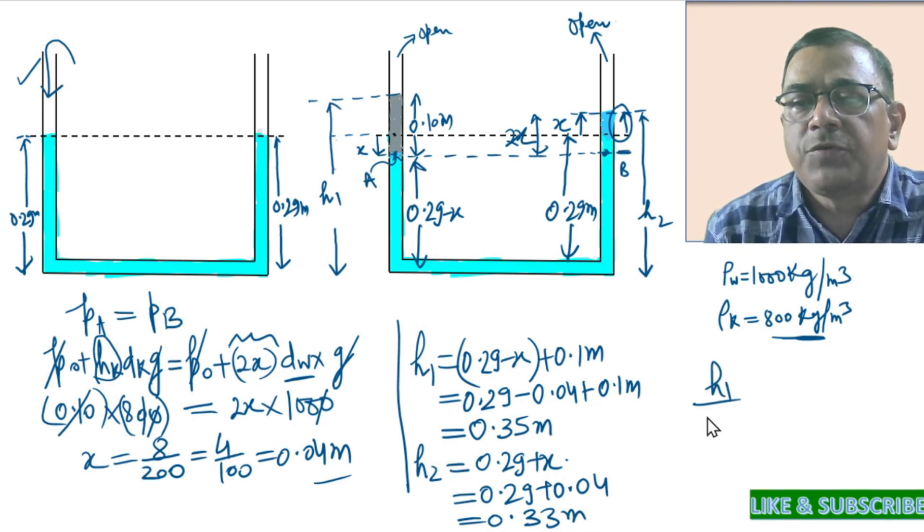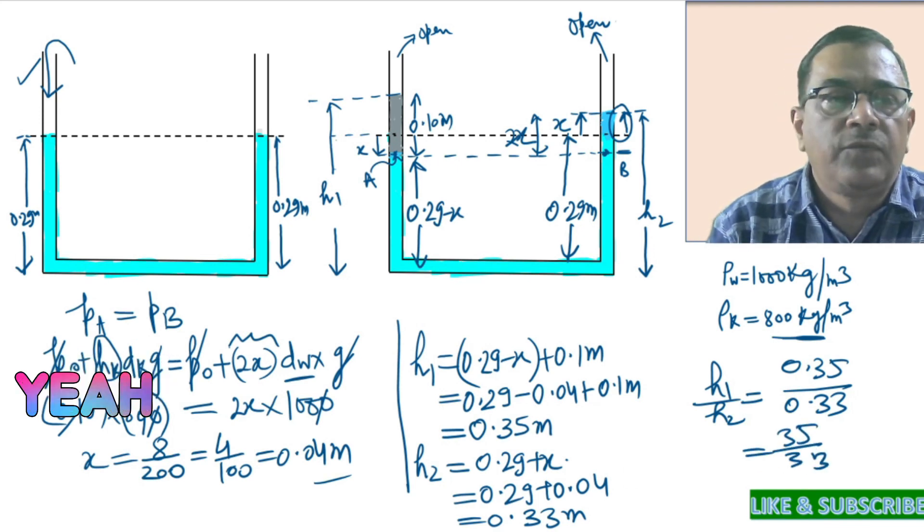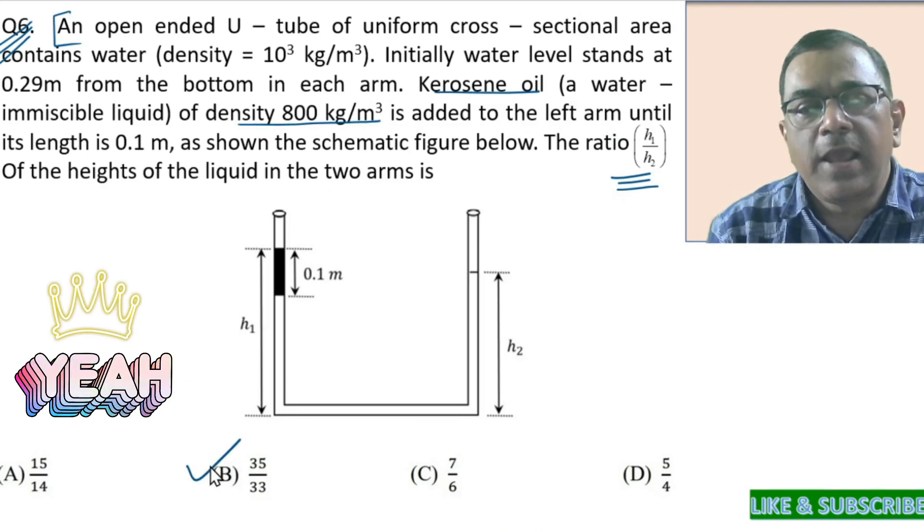And thus, H1 by H2 equals 0.35 divided by 0.33 equals 35 by 33. So, the correct option happens to be B.